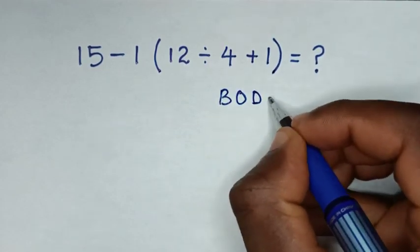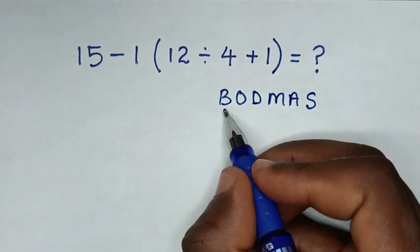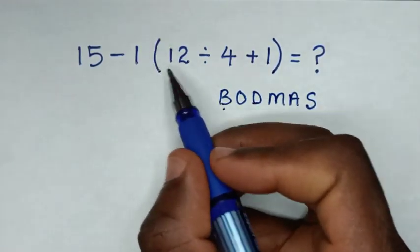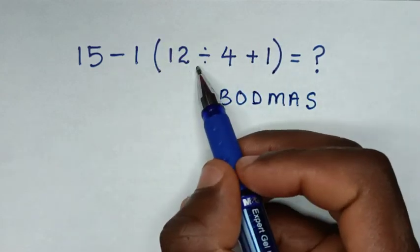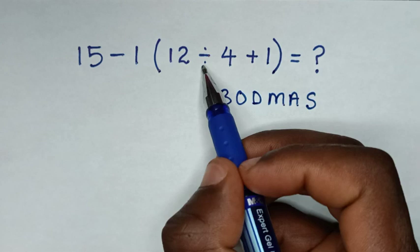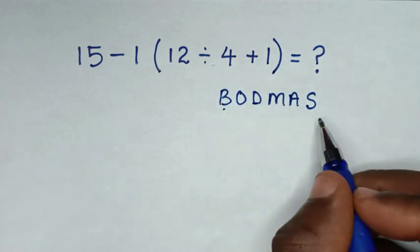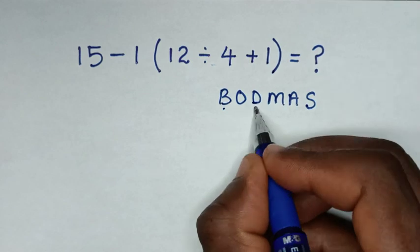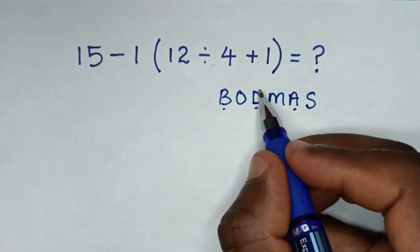BODMAS - where B is bracket. We have this bracket with operations inside: division and addition. According to this rule, we start first with division, then addition. So we deal with division first.